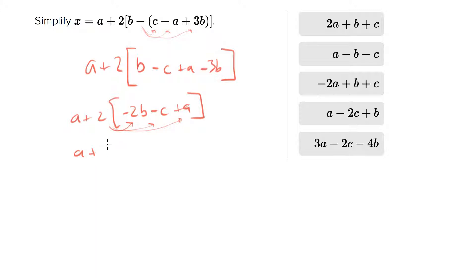So a plus 2a is 3a, so I have 3a minus 4b minus 2c.